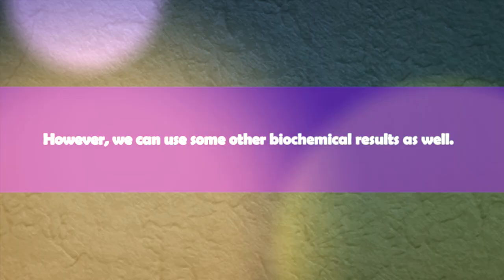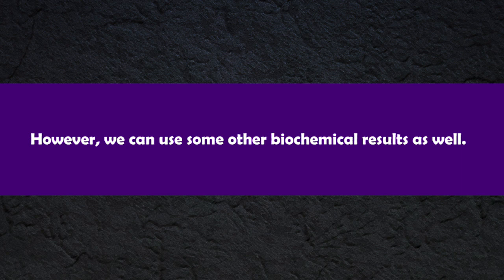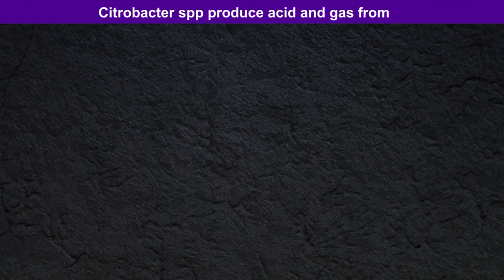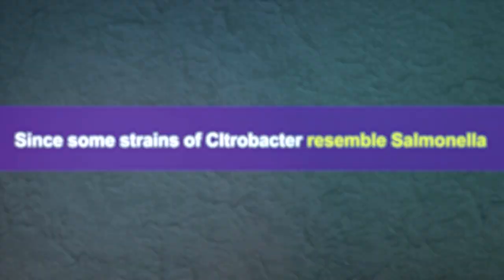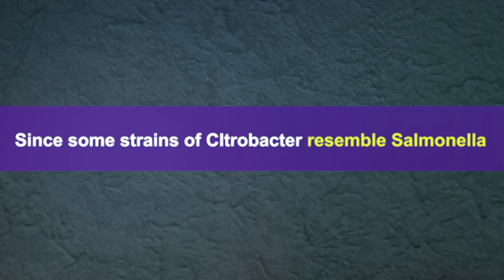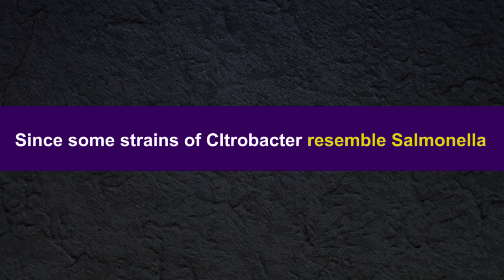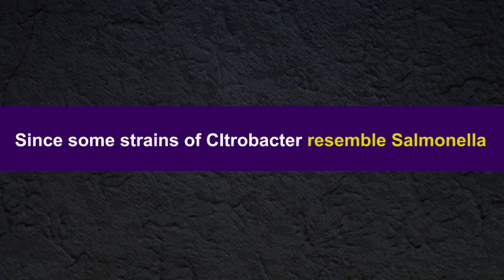We can use some other biochemical results as well. For example, Citrobacter species produce acid and gas from glucose, galactose, inositol, sorbitol, etc. Remember, since some strains of Citrobacter resemble Salmonella, they can cause agglutination with Salmonella polyvalent sera, which can lead to misidentification.